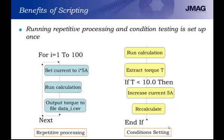One of the benefits of scripting is that running repetitive processing and condition testing setup is done only once. In an example with 100 different iterations, instead of setting up 100 different models, we can set up one script with a loop that iterates 100 times — for I equals 1 to 100, set a value to I times a current, run the calculation, output the torque to a CSV file, and move on. Everything is automated through this script.